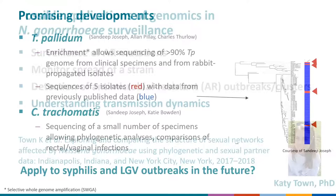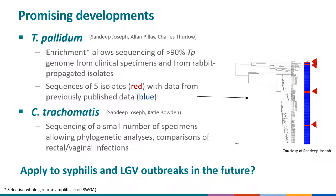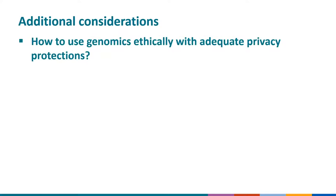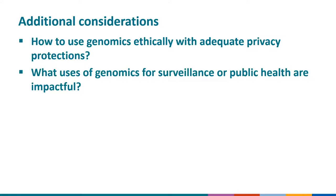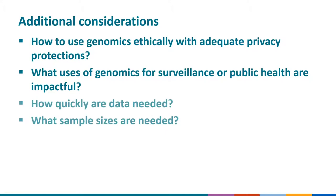Before concluding, a few additional considerations as we move forward with genomics for public health. As we explore transmission dynamics and outbreak detection, we need to keep ethical issues and privacy concerns in mind. When culture is used, the sequence does not contain any human DNA, and mutation rates of most STDs are low enough that it's unlikely to show directionality of transmission. But as sequencing from clinical specimens expands, ethics and privacy will need ongoing attention. We'll need to tease out how to use genomics in ways that are impactful and change what we do, and determine how quickly data are needed and what sample sizes are required.